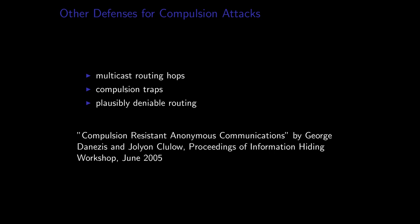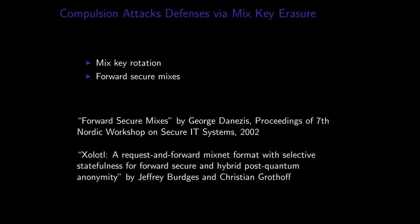What other defenses are there for compulsion attacks? This is kind of pretty devastating for mixed networks because we can't really prevent it, but we can make it harder. Multicast routing hops, compulsion traps, and plausible deniable routing are some other tactics. Compulsion-resistant anonymous communication by George Janice's. This is another paper if you're interested in going in more detail. In the future, in Cats and Post, we might implement some of these, but for right now, we think that mixed key rotation is the main strategy for key erasure. In the future, we might consider forward-secure mixes.